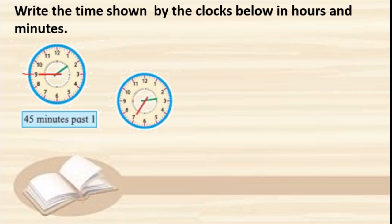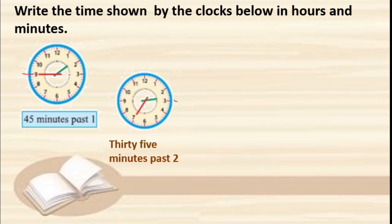See this next clock. The minute hand is on 35 — that is 35 minutes past. The hour hand is between 2 and 3, so we take 2. This is 35 minutes past two, because it is near to three.